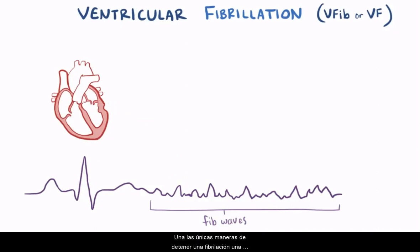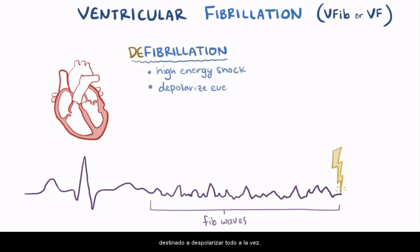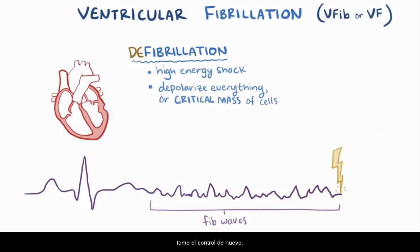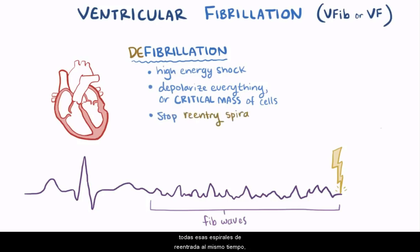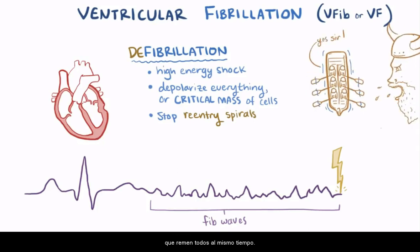One of the only ways to stop fibrillation once it's started, unless it breaks on its own, is again external electrical stimulation, or defibrillation. This is typically a high-energy shock that's meant to depolarize everything at once, or at least a large enough portion of the heart tissue — a critical mass — to allow the sinus node, or the heart's main pacemaker, to take control again. Basically we're trying to interfere and stop all these reentry spirals at the same time — like if the captain of our rowboat got on the loudspeaker and screamed to get everyone's attention all at once.